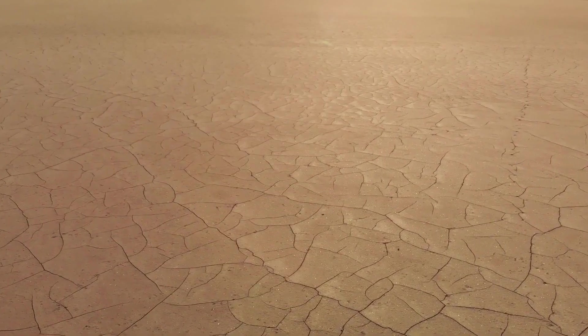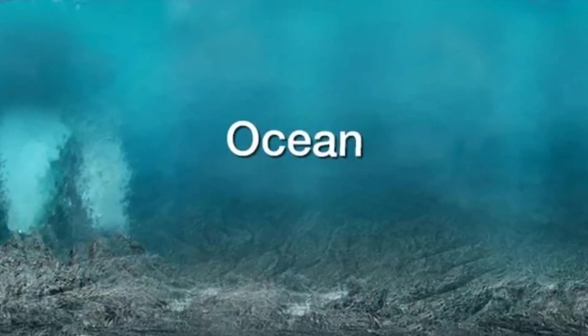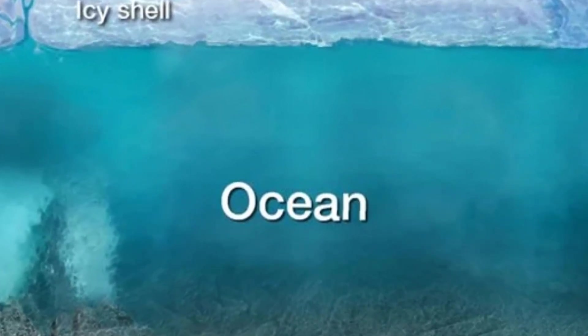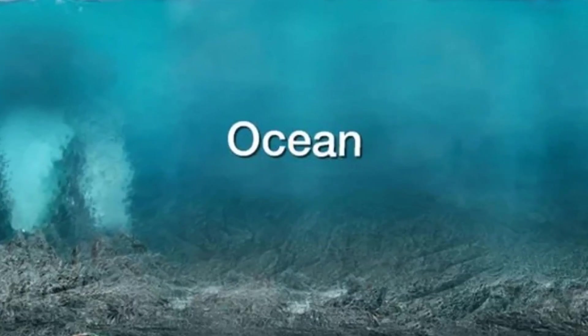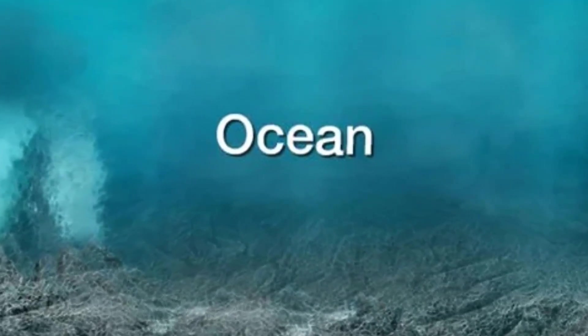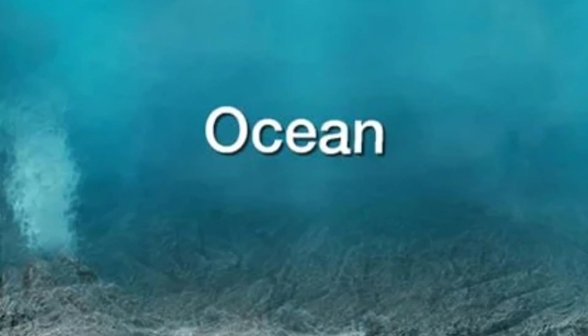Europa, on the other hand, has a lot of water. It is estimated that under its layer of ice, there might be twice the amount of liquid water present on Earth, with Europa's average ocean depth estimated to be at 150 kilometers, compared to Earth's which averages at a mere 4 kilometers.